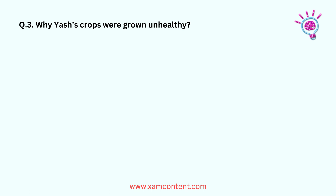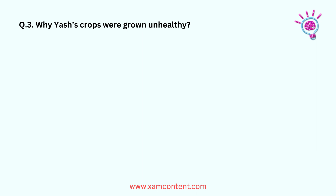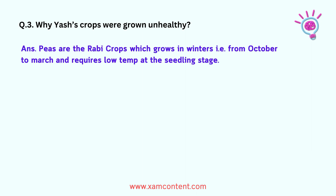Why were Yash's crops grown unhealthy? Peas are rubby crops which grow in winters, i.e. from October to March, and require low temperature at the seedling stage.